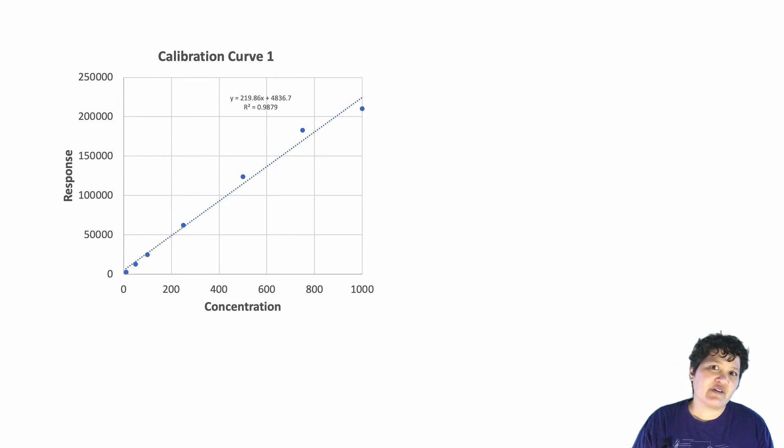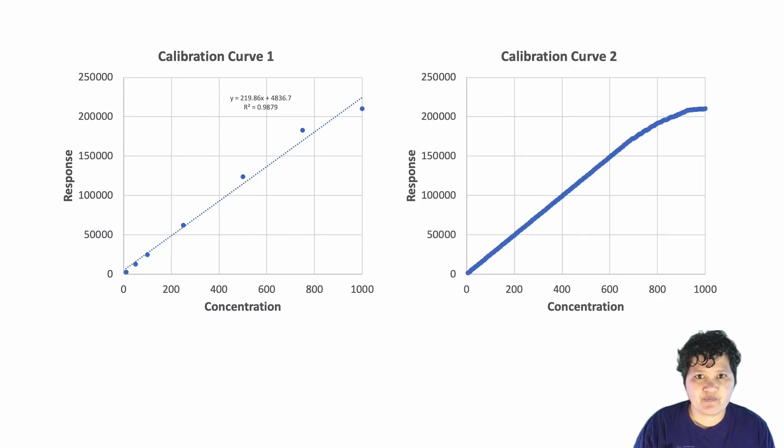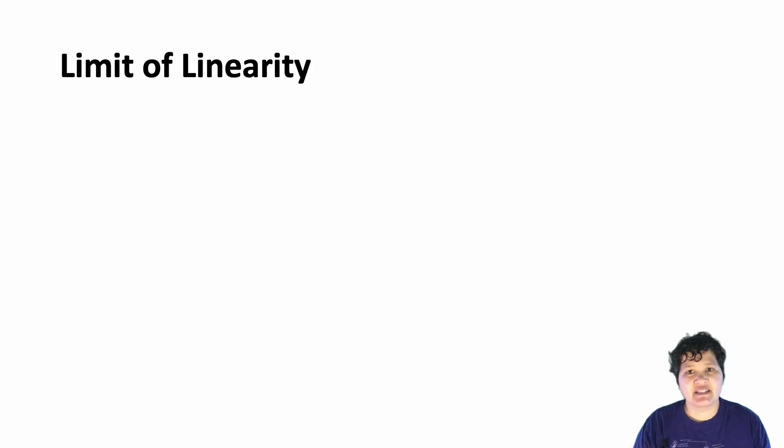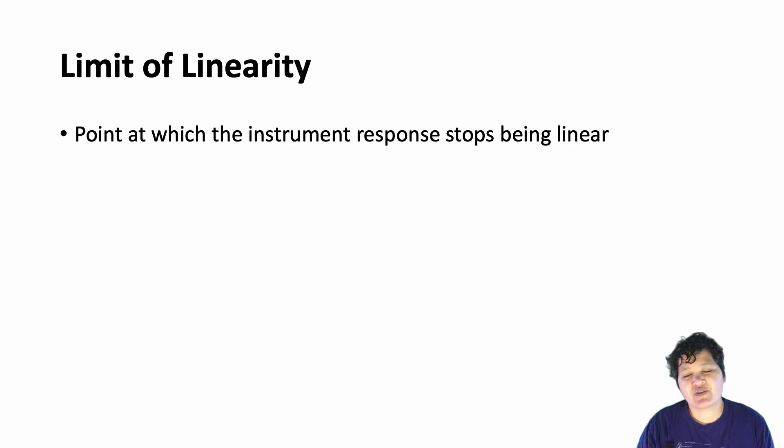So your advisor is very frustrated and tells you to make 100 different standards all at different concentrations. After a very long day in lab, you finally made all the standards, you run them on the instrument and you got this graph. What you have discovered is the limit of linearity for your instrument, which is basically the point at which you stop getting a linear instrument response. The most common reason this happens is that you have maxed out the detector. In other words, your detector cannot register any more electrical signal.